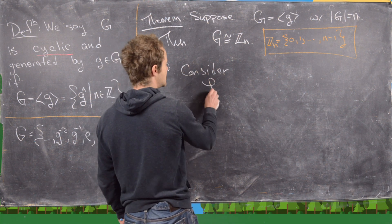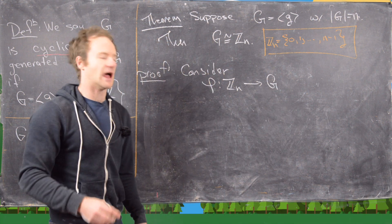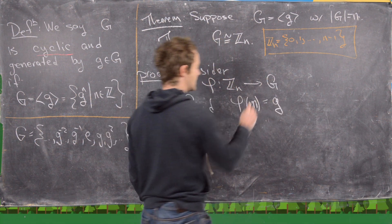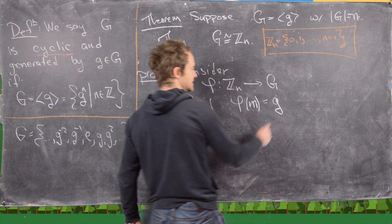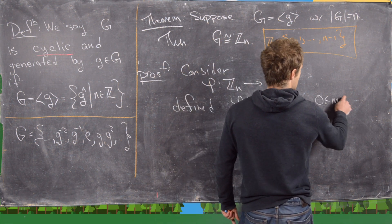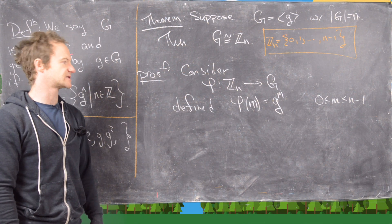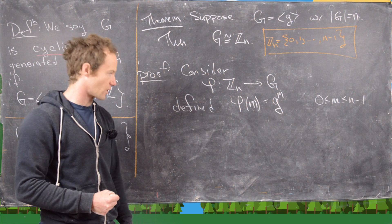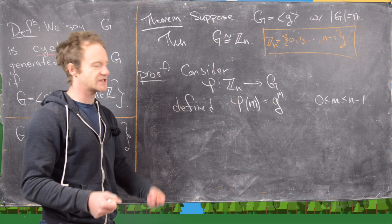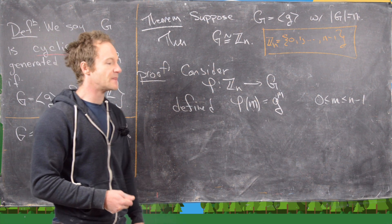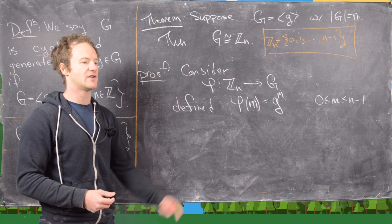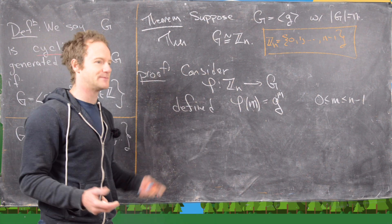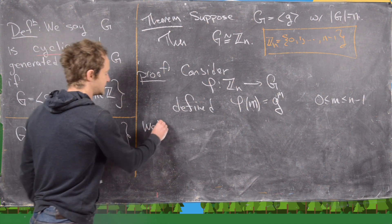Consider the map φ from ℤₙ to G defined by φ(m) = gᵐ, for all m between 0 and n−1. Before proceeding, since elements of ℤₙ can take many different forms — for example in ℤ₃ the number 2 is the same as 5 which is the same as 8 — we need to check that this is a well-defined function, meaning the output doesn't depend on which name we use for an element.